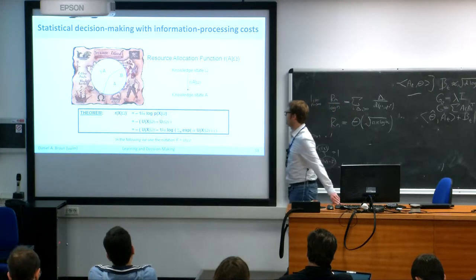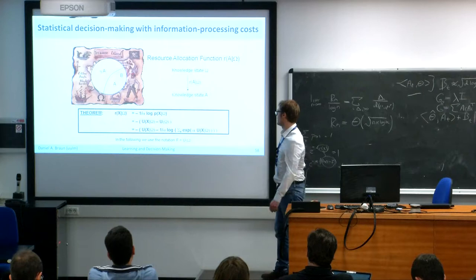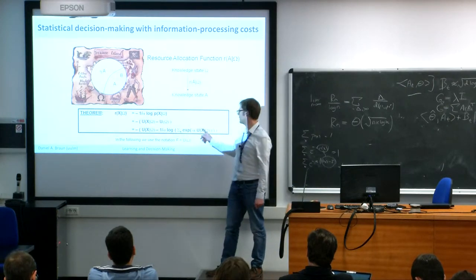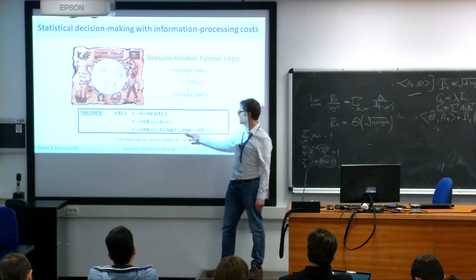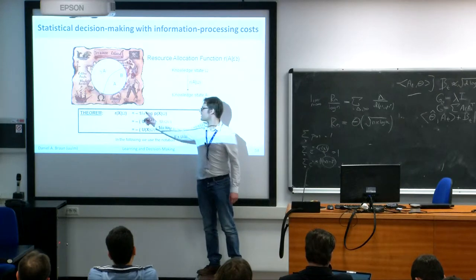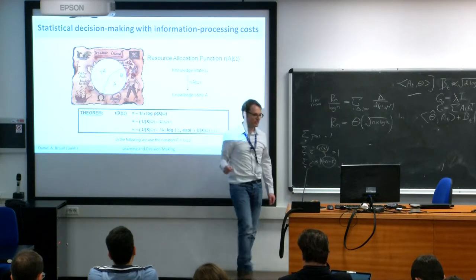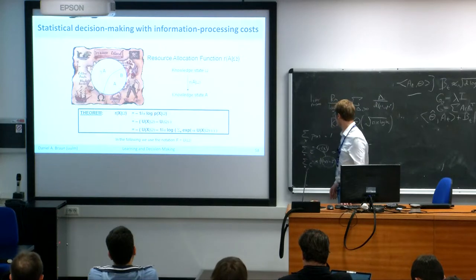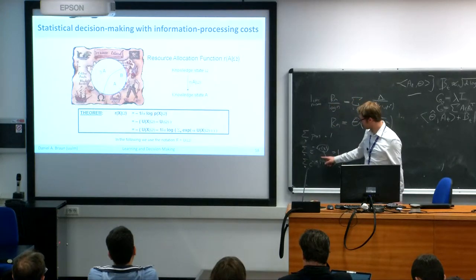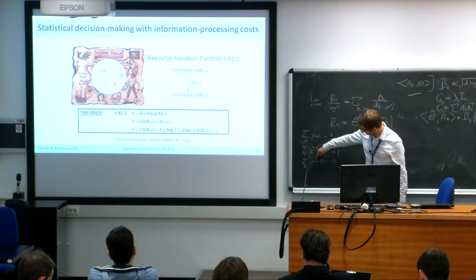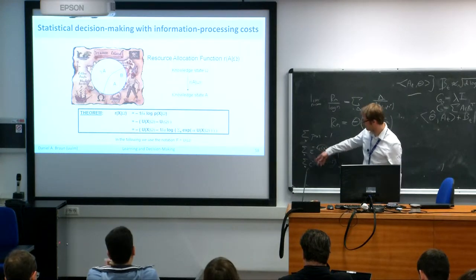If alpha goes to zero, it will just be an average of these utilities. But in general it will be like this. We raised before the issue of alpha — it's a translation factor, and it translates between the units of utilities and the units of nats or bits or whatever you choose.